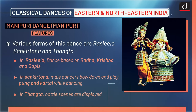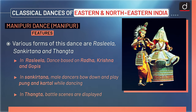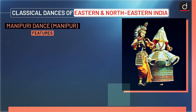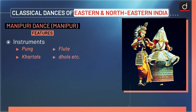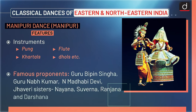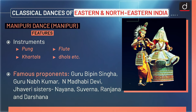In Rasleela, the dance is based on Radha, Krishna and Gopis. In Sankirtana, male dancers bow down and play Pung and Kartal while dancing. In Thangata, battle scenes are displayed. Instruments used in Manipuri dance are Pung, flute, kartals, dhols, etc. Famous proponents are Guru Bipin Singh, Guru Nabakumar and Madhavi Devi, and the Jhaveri sisters: Nayana, Suvarna, Ranjana and Darshana.